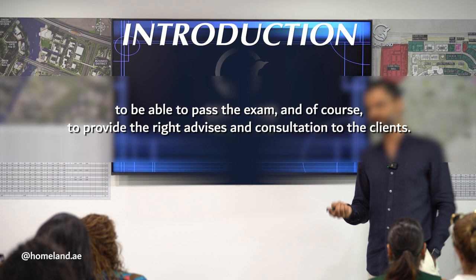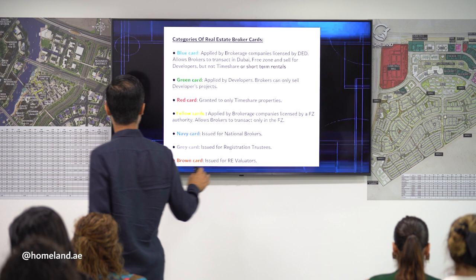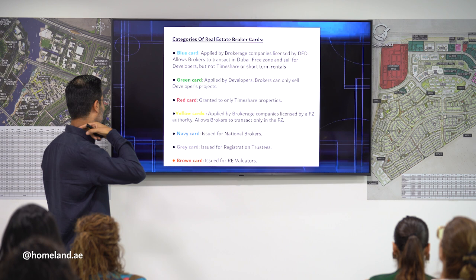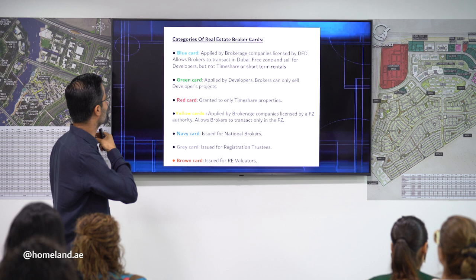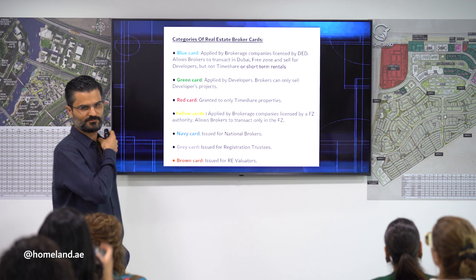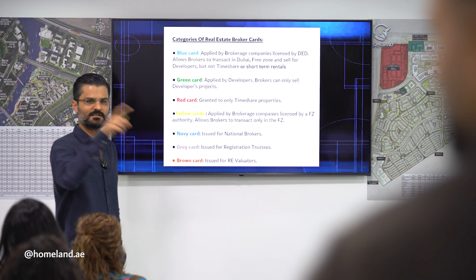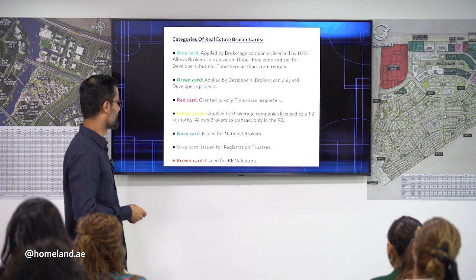This is just a quick review before going to those points. Blue card is for brokers; green card is for developer sales; red card is for timeshare properties and short-term rentals. Yellow cards are applied by brokerage companies in the free zone; navy card is for national brokers. The PDF file is in the shared folder. Green card is for registration trustees and brown card is for evaluators.